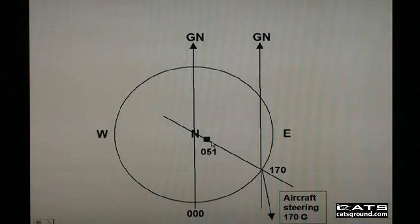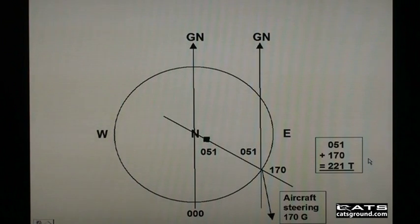True north is in the centre of the page. There's a dead giveaway for that because there's an N in the centre of the circle. Transfer the 051 longitude angle into this angle in here. And if you measure round from the true north reference, 000, which is here, 051 plus 170, you'll get 221 degrees true.